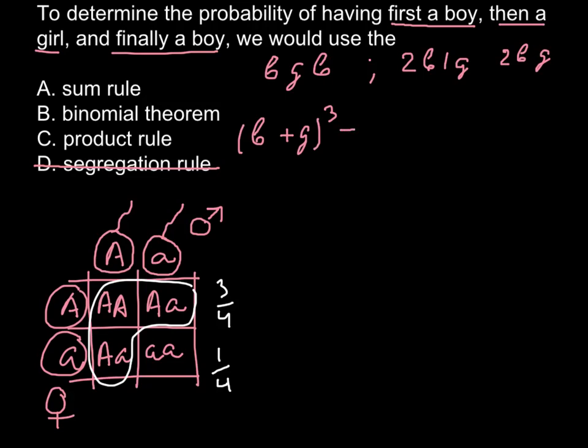This gives us the formula B plus G raised to the 3rd power, and we are going to expand it as B³ plus 3B²G plus 3BG² plus G³. We are going to use this part of the formula that explains we have two boys, as you see, and one girl. So we're going to use this part of the formula to solve this problem when no particular order is given.